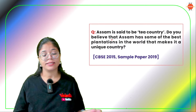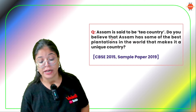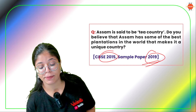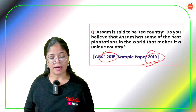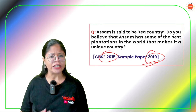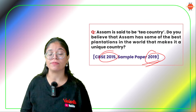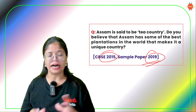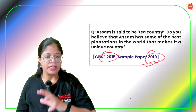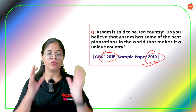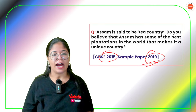Moving ahead: 'Assam is said to be a tea country. Do you believe that Assam has some of the best plantations in the world that makes it a unique country?' — asked in CBSE 2015 and Sample Paper 2019. Yes, Assam is rightly called a tea country because it has the world's largest concentration of tea plantations. There are many tea gardens in Assam. Tea is grown in the traditional way — hand-plucked leaves that are dried, packed, and delivered to shops. This traditional practice is what makes Assam very unique.